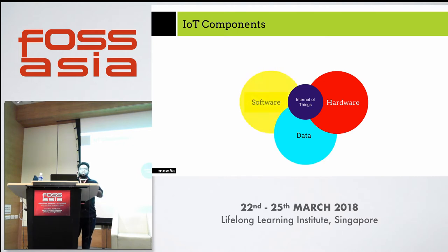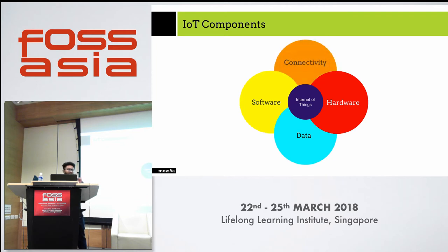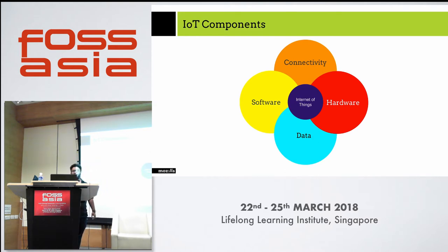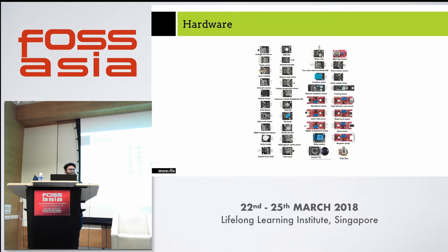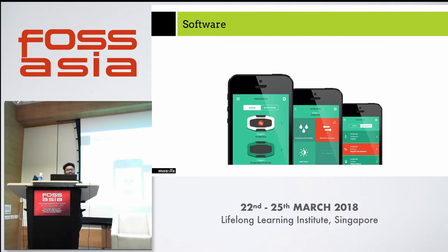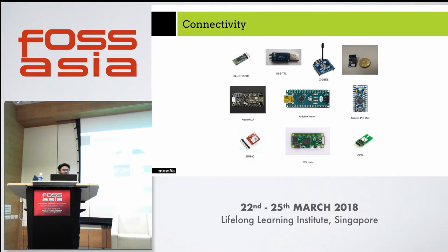They send this data to the software which interprets and gives it to the user. And all is connected by the form of maybe Bluetooth, Wi-Fi, and various communication protocols. There are a number of sensors available, and the data is what they communicate in. The software is the user end. For connectivity, we have Zigbee, we have Bluetooth, we have a number of things.